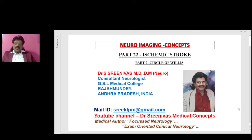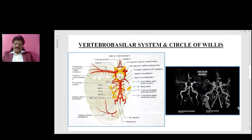We are continuing with the neuroimaging concepts — ischemic stroke part 22. We are going to talk about the Circle of Willis, which is part 2. So we shall continue with the Circle of Willis.